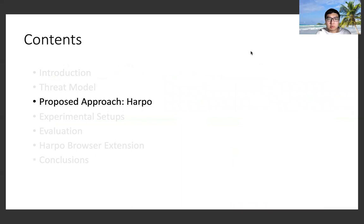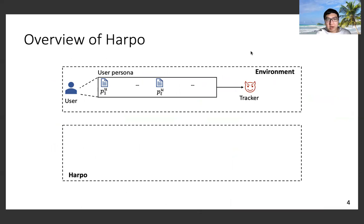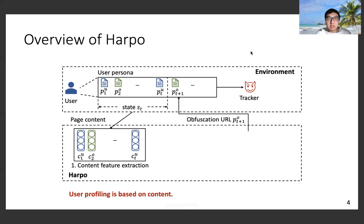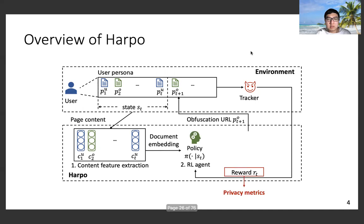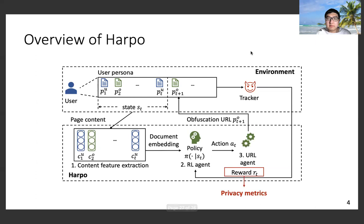Next, we present our approach Harpo. At a high level, Harpo interleaves users' web page visits with obfuscation web page visits. It starts by extracting the content features of web pages visited by users and featurizing them using document embeddings. Note that we extract content features since the user profiling threat model is based on content. Next, it will train an RL agent to select obfuscation URLs in order to maximize the reward. The reward in our application is the privacy metric we define. Finally, the URL agent will inject obfuscation URLs, interleaving them with the URLs visited or clicked by users.